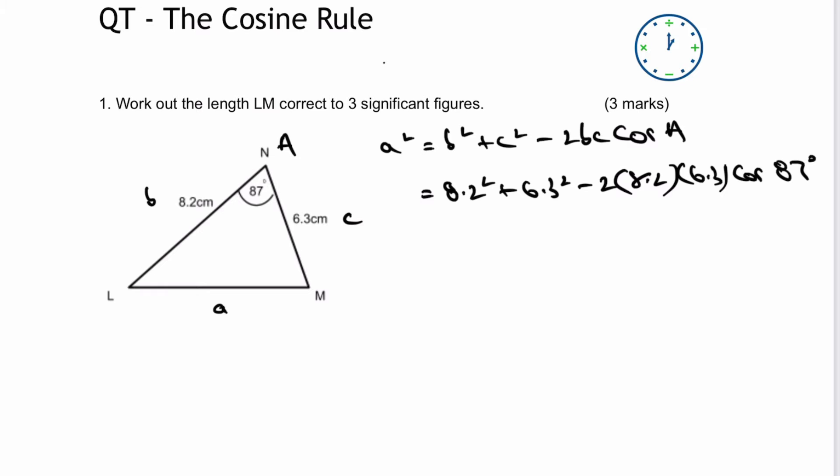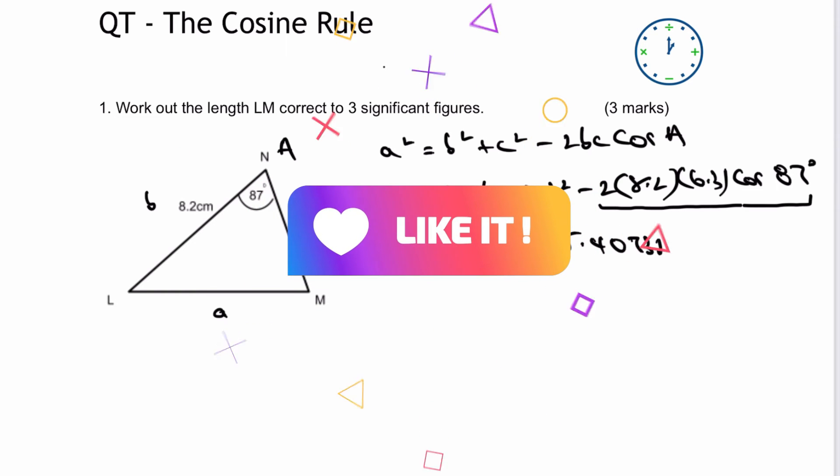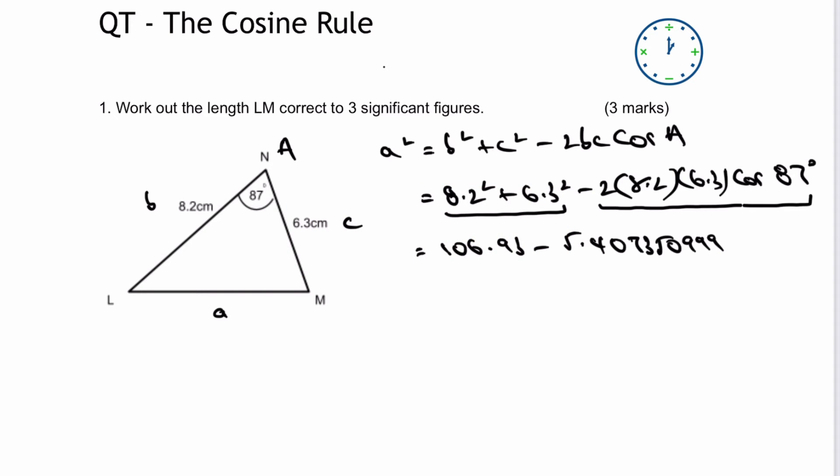So I put all of that into my calculator. Let's be very careful with this. What I would normally do is calculate the first two terms and then the second series of numbers there because then it stops me from being a little bit confused with the calculator. So 106.93 take away, in this particular case, 5.407350999. But in future, what I'm going to do is actually just write that as the answer key.